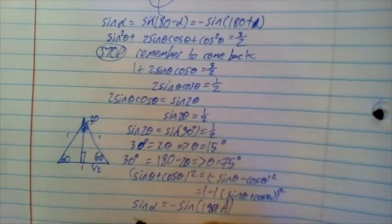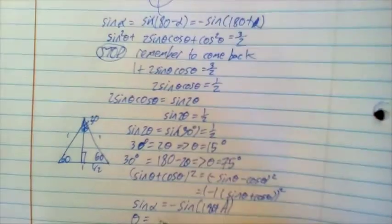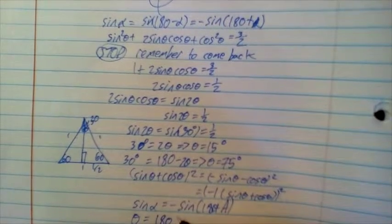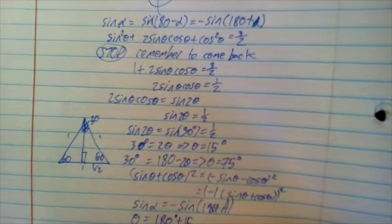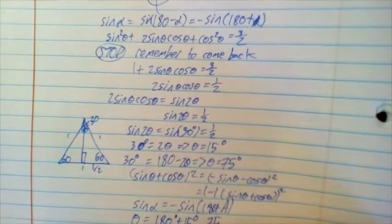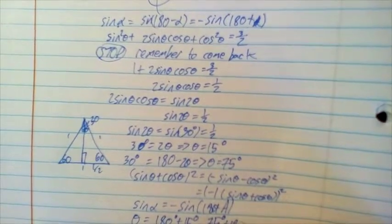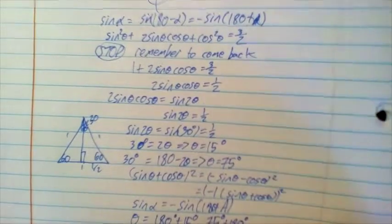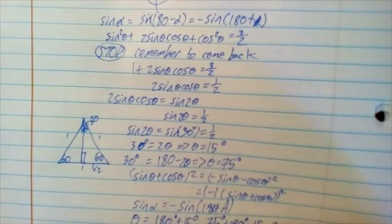We have that, therefore, theta is equal to 180 degrees plus 15 degrees, and also equal to 75 degrees plus 180 degrees, and also equal to, of course, 15 degrees and 75 degrees.